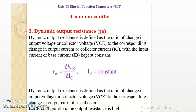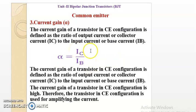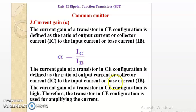To summarize: input resistance is very low and output resistance is very high. The last parameter is current gain. The current gain in a transistor in CE configuration is defined as the ratio of output current — collector current IC — to the input current IB. So current gain β = IC / IB, that is collector current to base current.